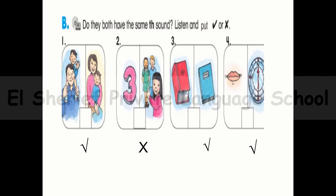Now it's a listening question. Number one: 'father' and 'mother' — they both have the same TH sound, so the answer is true. Number two: 'three' and 'that' — they are different, so false. Number three: 'thick' and 'thin' — both have the same TH sound, so true. Number four: 'mouth' and 'north' — they have the same TH sound, so true.